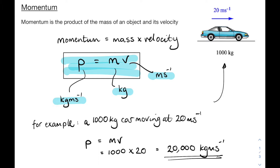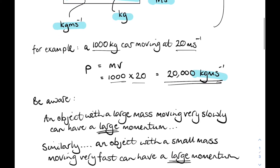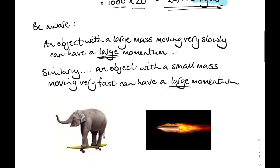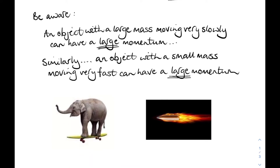Here's an example of a car: mass 1000, travelling at 20 metres per second — its momentum is 20,000 kilogram metres per second. But be aware: objects with a large mass moving relatively slowly, like an oil tanker or indeed an elephant on a skateboard — large mass, small velocity — can still have quite a large momentum.